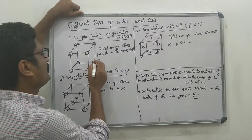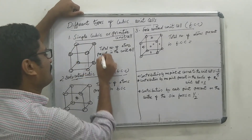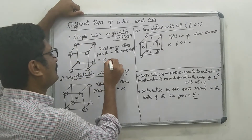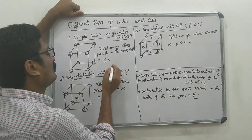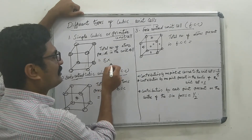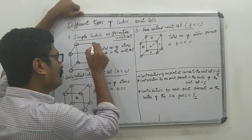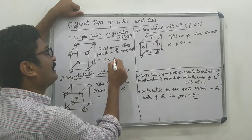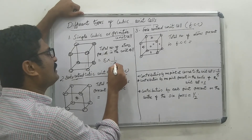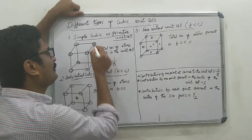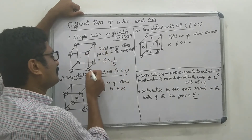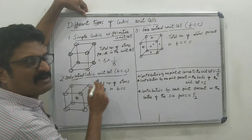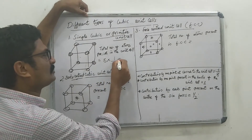In the simple cubic unit cell, you have 8 corners, and 8 corners × 1/8 is equal to 1.